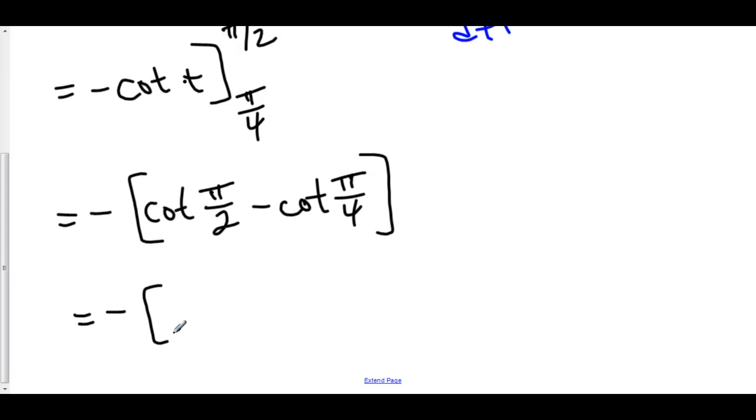Well, cosine of π/2 is 0 and 0 over anything is 0. So, this is just 0 minus cotangent of π/4.